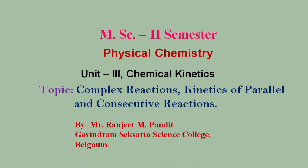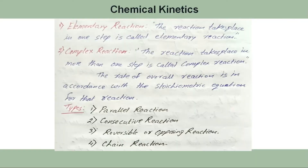Good morning everyone. In today's class, we are going to discuss about complex reactions — reactions of parallel and consecutive reactions. Chemical kinetics is a branch of chemistry which deals with finding out the rate or velocity of a chemical reaction and the factors affecting the same.